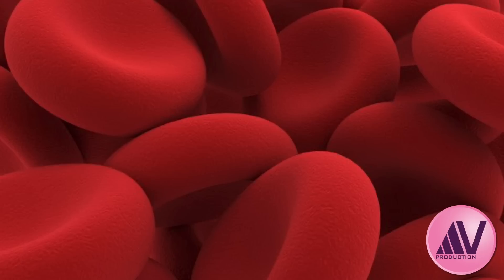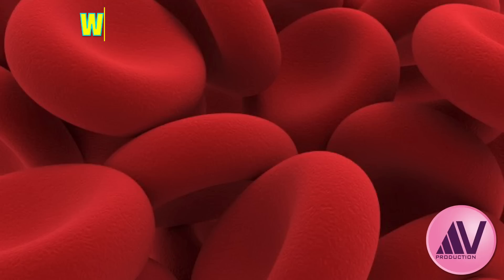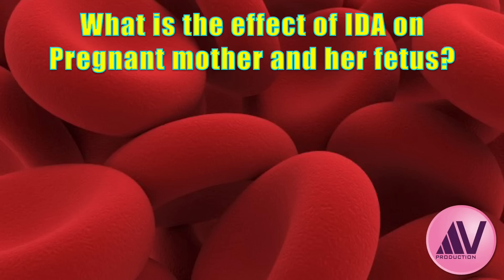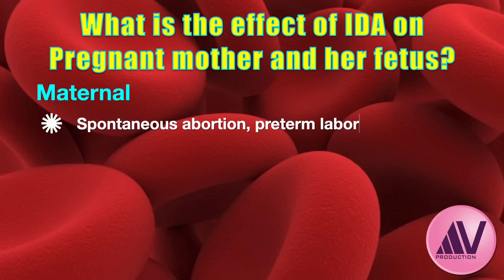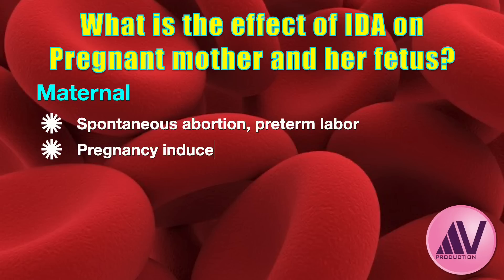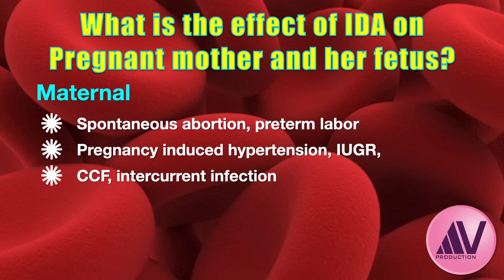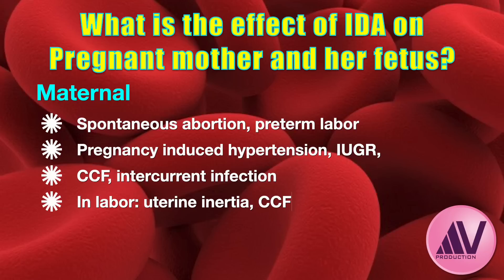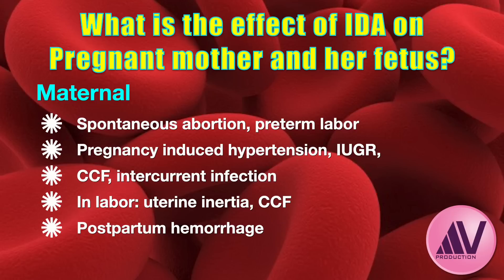When studying any medical disorder complicating pregnancy, it is imperative to understand its impact on both the pregnant woman and her fetus, and how pregnancy influences the condition. Women with moderate to severe anemia are more susceptible to spontaneous miscarriage, preterm labor, pregnancy-induced hypertension, intrauterine growth restriction, congestive cardiac failure, and intercurrent infections. During labor, complications include uterine inertia, congestive cardiac failure, postpartum hemorrhage, puerperal sepsis, and poor lactation postpartum.